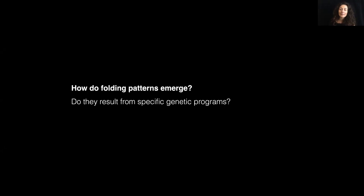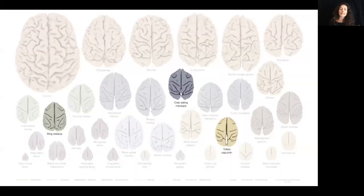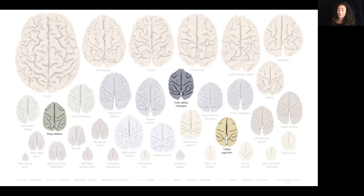Now, how do these folding patterns emerge? Do they result from specific genetic programs? If folding patterns resulted from genetic programs, we should expect that primates that are closer in the phylogenetic tree would have a folding pattern that is more similar than compared to primates in farther apart branches of the phylogenetic tree. Here I highlighted a few that we will look at particularly, and you see at the different colors that they come from different branches of the phylogenetic tree, for example, the crab-eating macaque and tufted capuchin.